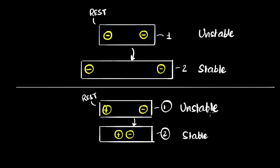Why do we say that? We say that because we like to personify nature — we like to think with our emotions and say nature has a preference. We say arrangement two is more preferred than arrangement one. The way to test this: if you start arrangement one at rest, you get arrangement two. But if you had started arrangement two at rest, would you get arrangement one? No. Therefore, nature prefers two over one, and we say two is more stable compared to one. Same thing for the charge example: nature prefers the closer arrangement over the farther one.